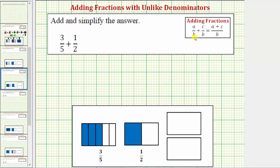So to add two fractions, once we have a common denominator, the denominator stays the same and we add the numerators. Looking at our example, we have three fifths plus one half. Notice how we do not have a common denominator and therefore we cannot add these fractions in their current form.